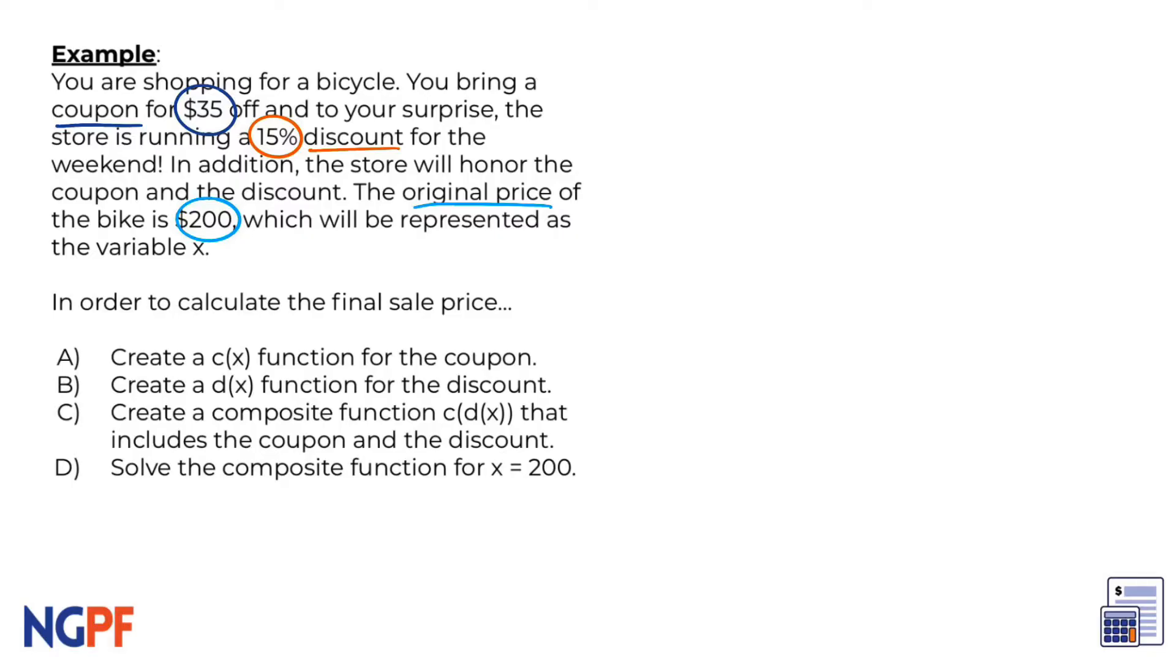We are asked to calculate the final sale price by following these four steps. Since x is equal to the original price of the bike and the function c(x) represents the price only using your coupon, what would the function notation be?